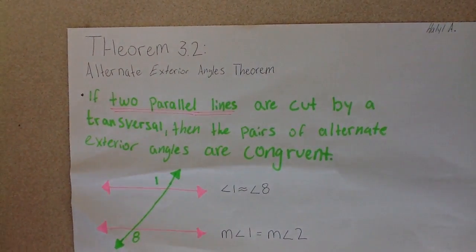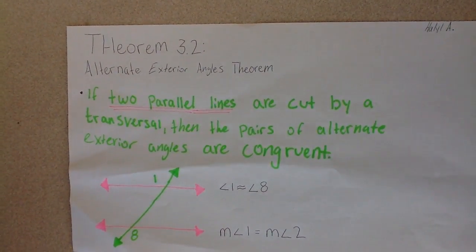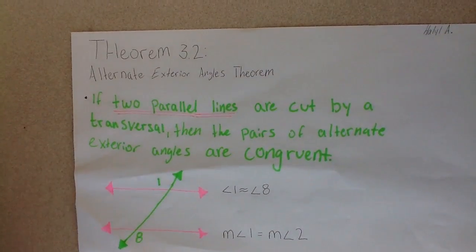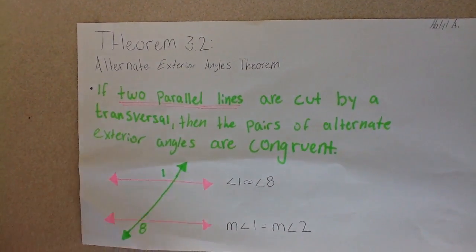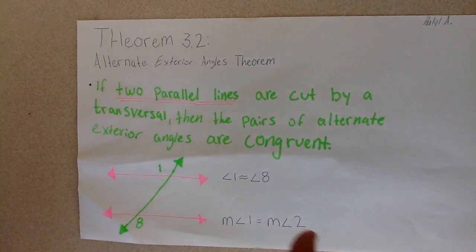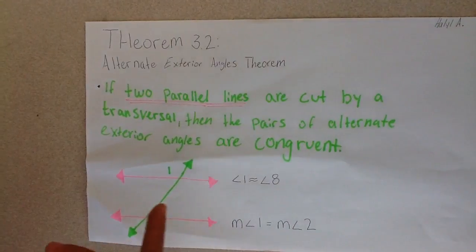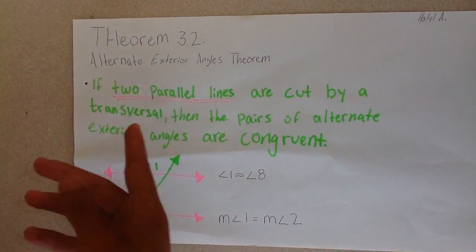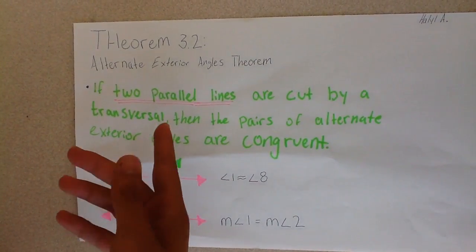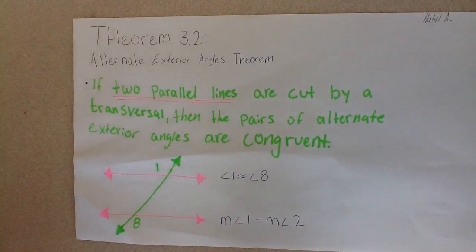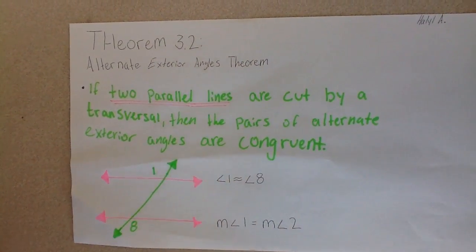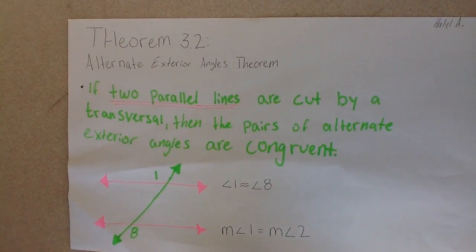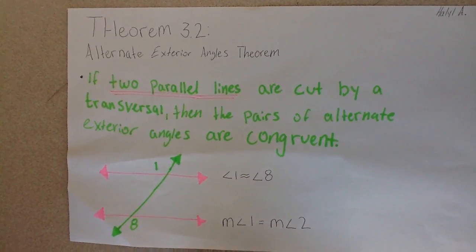My name is Elio and this is problem number one on page 146 in section 3.2, which is about the Alternate Exterior Angles Theorem. Basically, this theorem states that if two parallel lines are cut by a transversal,